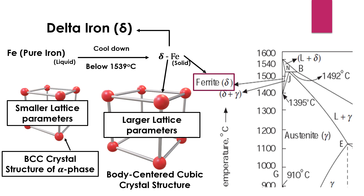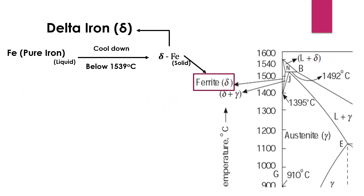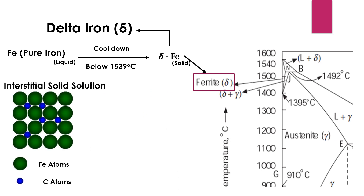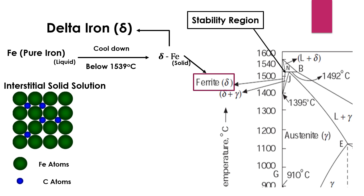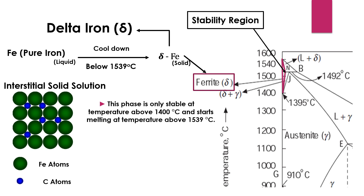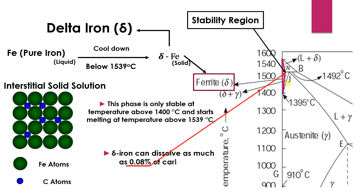This delta phase is also an interstitial solid solution of carbon in BCC iron, but it exists in the high-temperature region of the diagram. This phase is only stable at temperatures above 1400 degrees centigrade and starts melting at temperatures above 1539 degrees centigrade. Because of its larger lattice parameters, its solubility limit of dissolving carbon into its lattice is greater than the alpha phase — delta iron can dissolve as much as 0.08 percent of carbon in its interstitial solid solution at 1492 degrees centigrade.